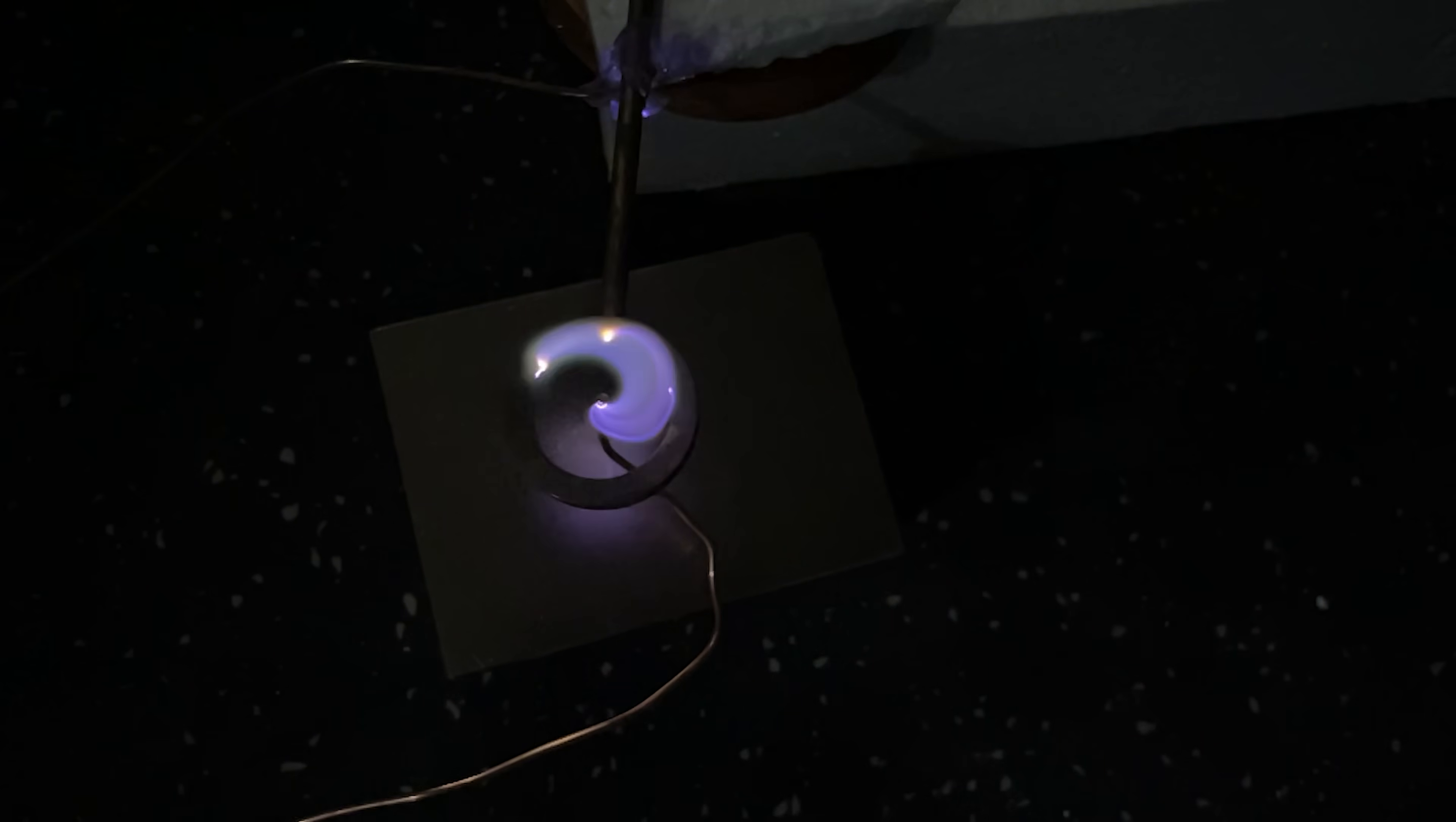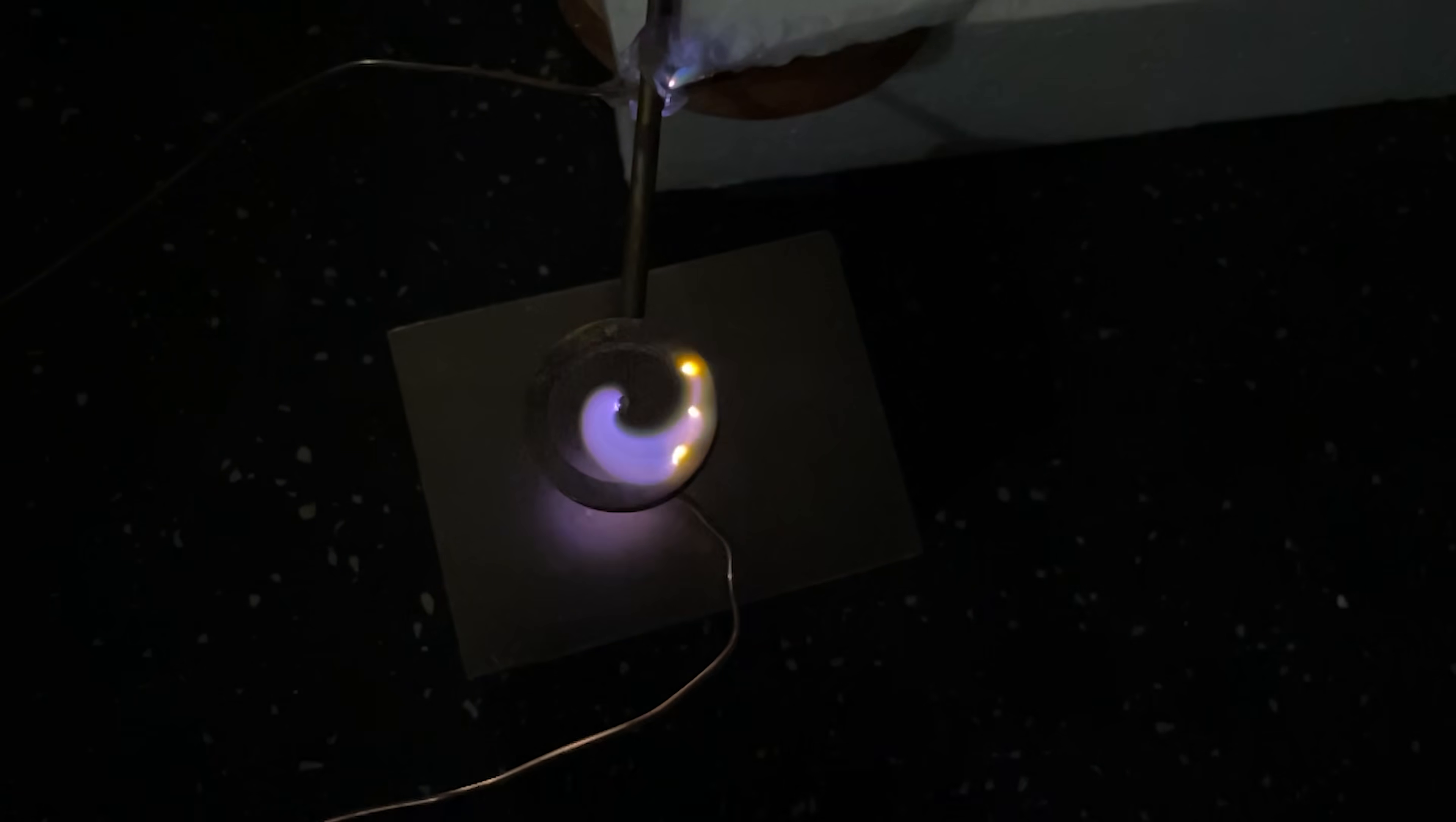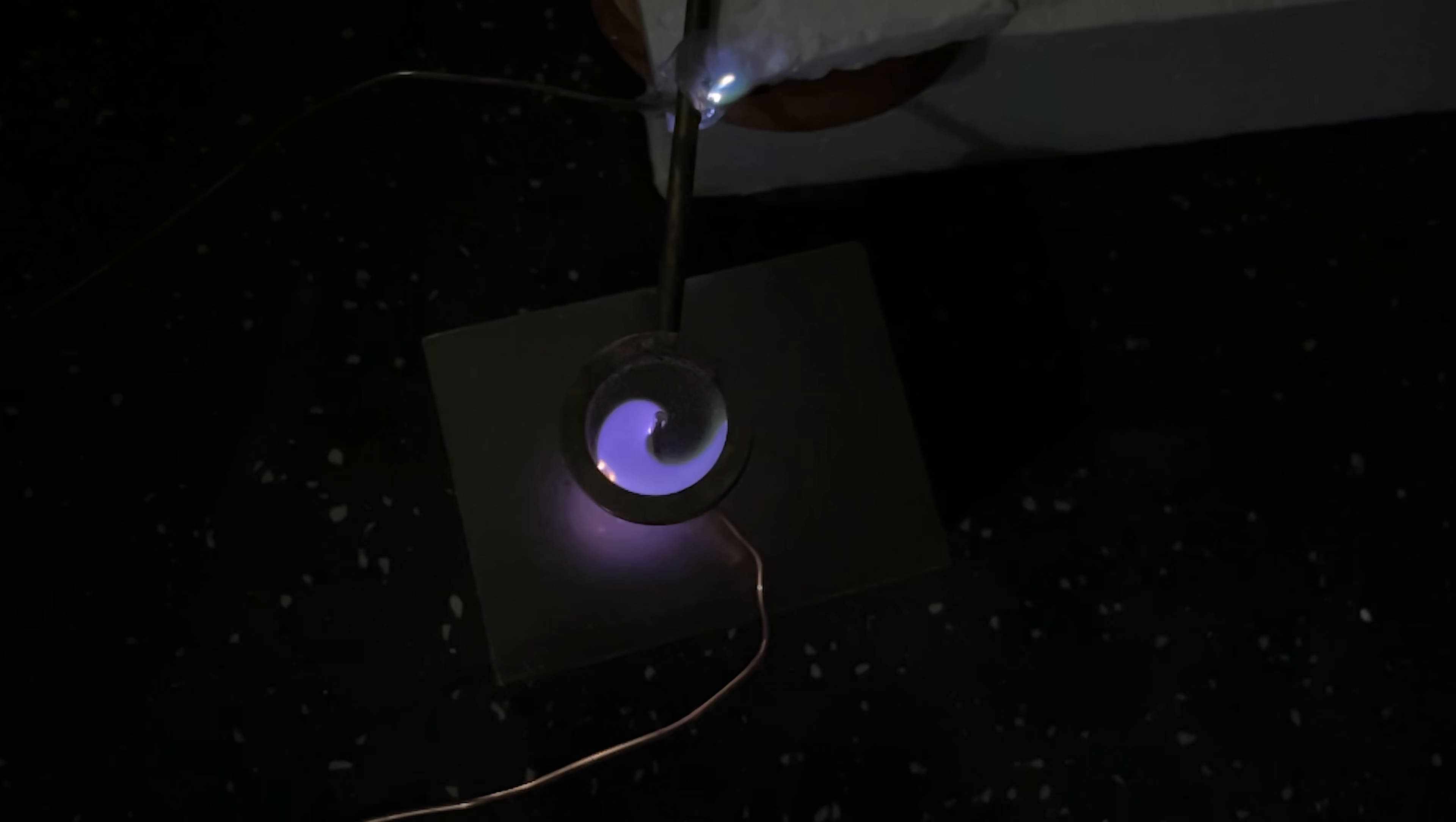The reason the arc is spinning is because as the electrons move through a magnetic field, there's a force that they feel called the Lorentz force. This causes the electrons to move at right angles to their direction of motion. So the plasma actually gets swirled around. You can see these perfect spirals here. This is the same phenomenon that makes all electric motors and generators work.